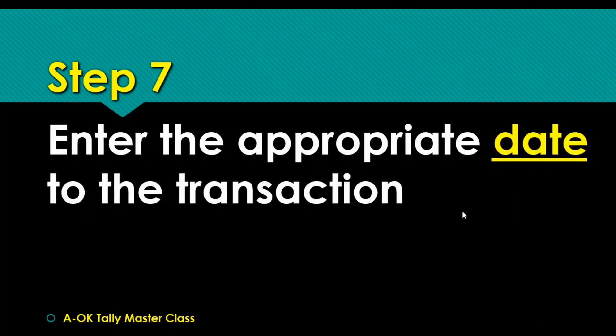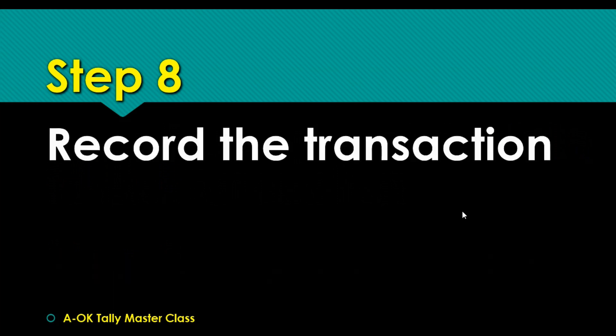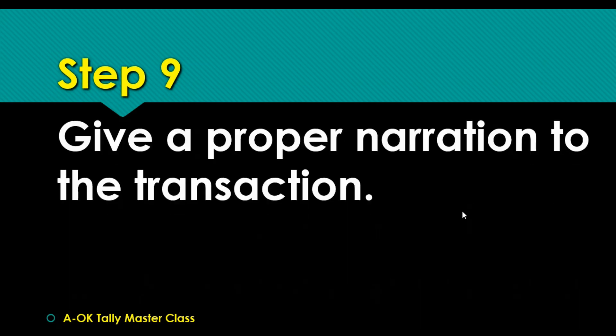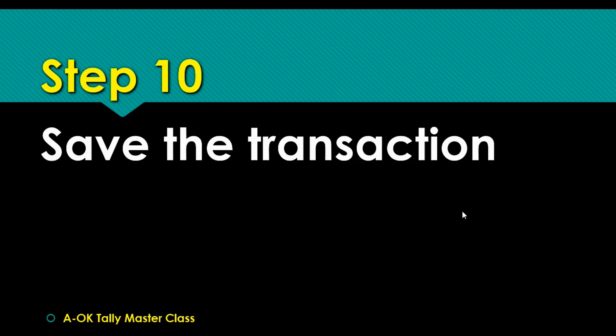Step number seven: once you've selected the right voucher, the next thing is to input your date for the transaction — every transaction has a date. Step eight is to record the transaction: you are debiting something, you are crediting something, you record and input the amount. After that, you give a narration — very important, without a narration nobody would really understand what you've done. Then we save by pressing Ctrl+A or hitting Enter after the narration.